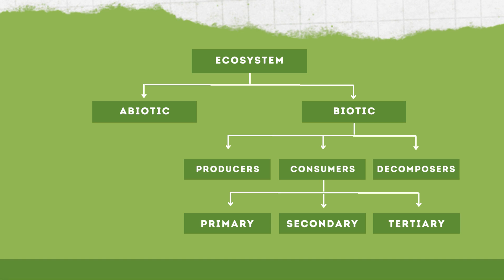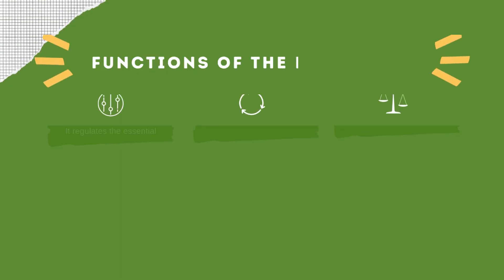Let us see how the ecosystem is classified. The ecosystem is classified into abiotic and biotic factors. In the biotic category, we see producers, consumers, and decomposers. In consumers, we can see primary consumer, secondary consumer, and tertiary consumer.